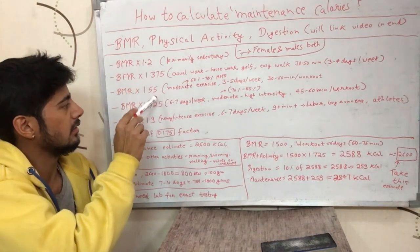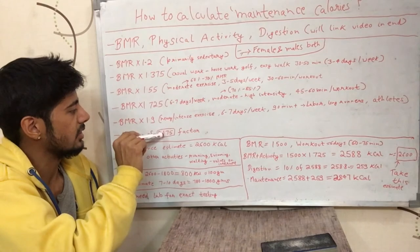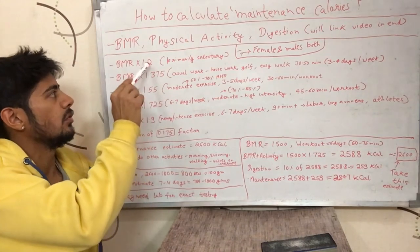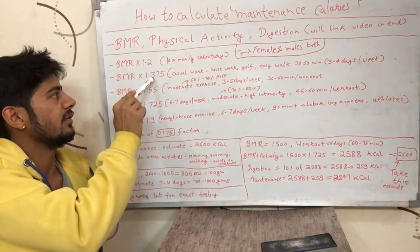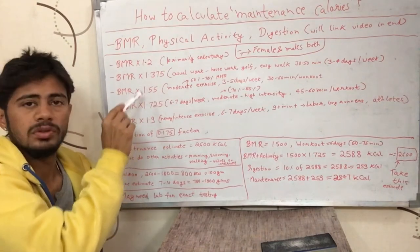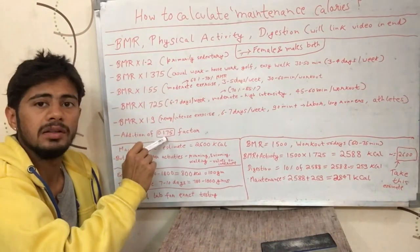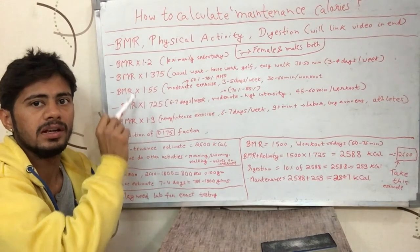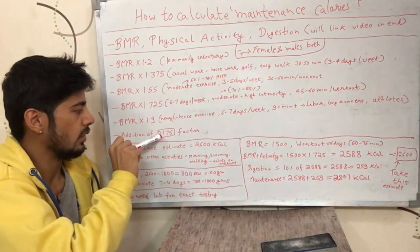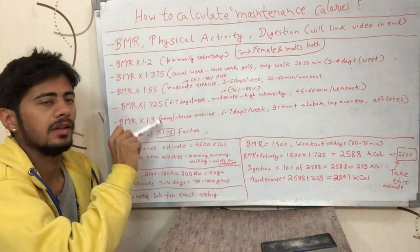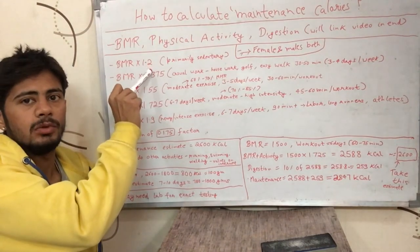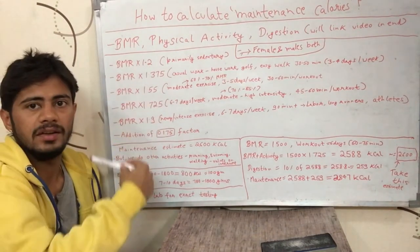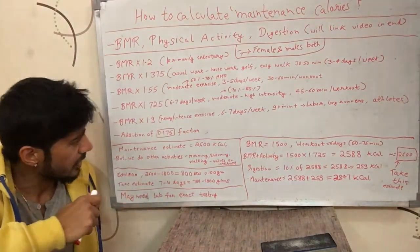Across all these activity levels, there is just an addition of 0.175 between each factor. You start at 1.2 and keep adding 0.175 to get each subsequent number — this is a useful way to remember them.